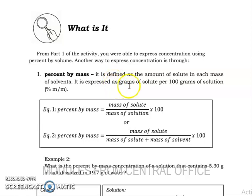It is defined as the amount of solute in each mass of solvents. It is expressed as grams of solute per 100 grams of solution. The equation is: percent by mass equals mass of solute divided by mass of solution times 100, or mass of solute divided by mass of solute plus mass of solvent times 100.